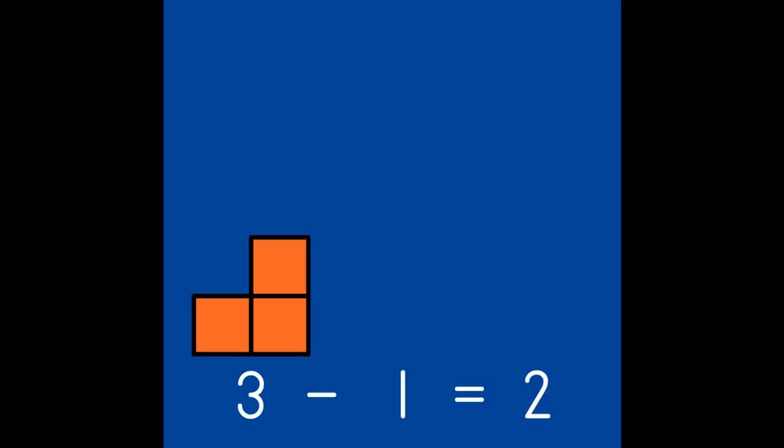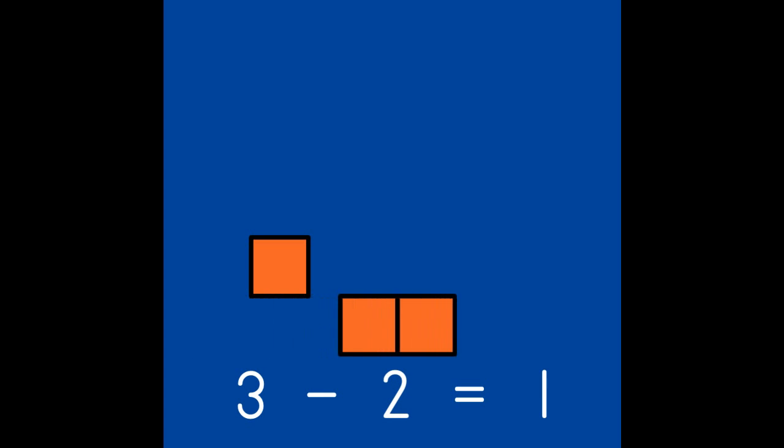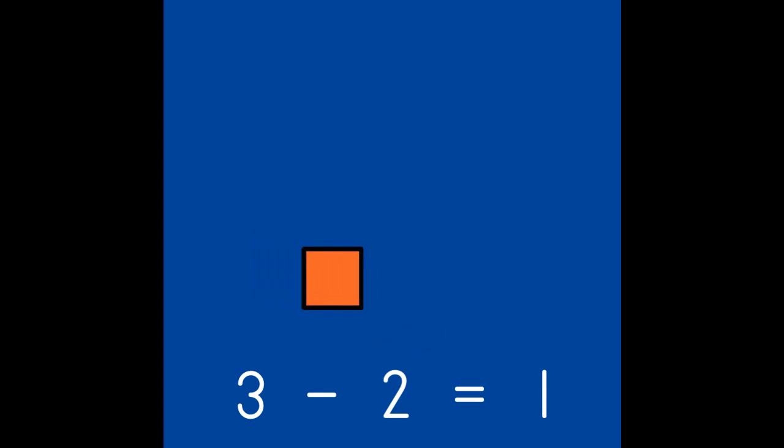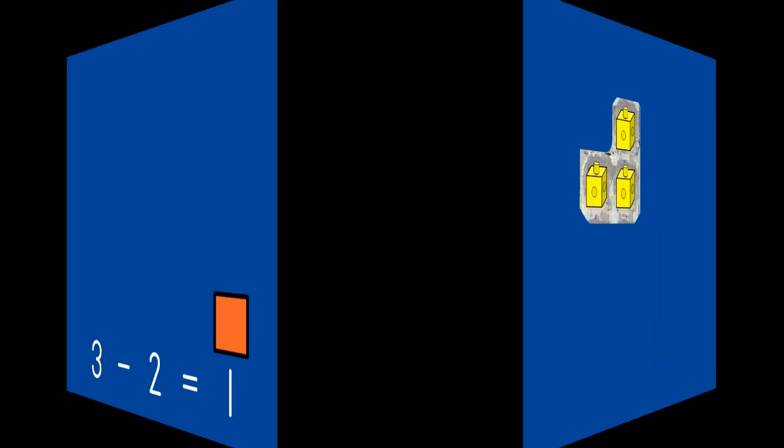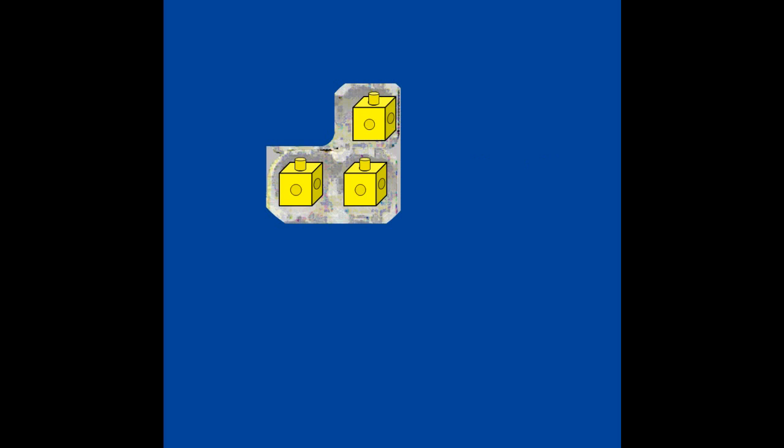It does not matter which partner we take away first. Here are 3 cubes in a 3 carton. If I take out 2 cubes, how many will be left in the carton? 1. Because 3 take away 2 leaves 1. What if I take 1 cube out of the carton? 2 are left.